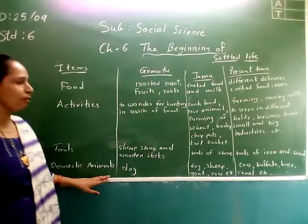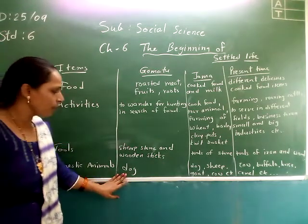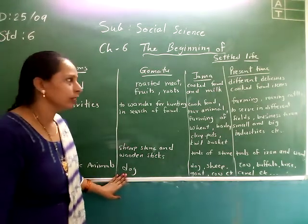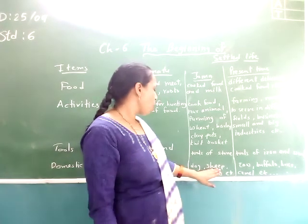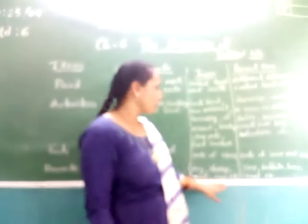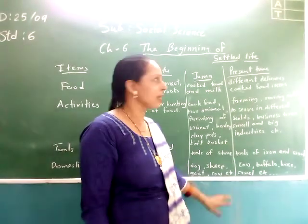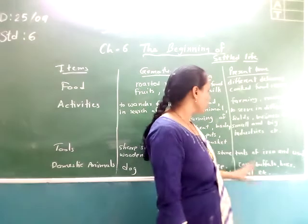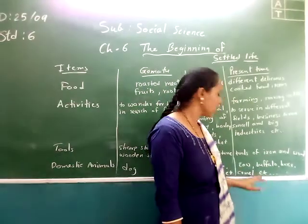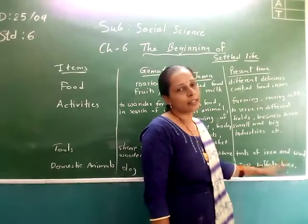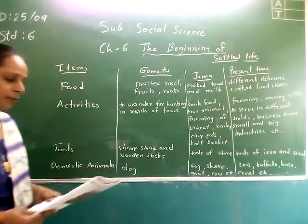Now, domestic animals — which type of domestic animal existed in the time of Homo 2? There was a dog in the time of Homo 2. In the time of Joma, dog, sheep, and cow were used as domestic animals. And in the present time: cow, buffalo, horse, camel, etc., for domestic purposes.